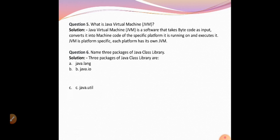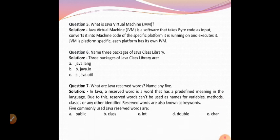What is Java Virtual Machine? Java Virtual Machine, that is JVM, is a software that takes bytecode as input, converts it into machine code of the specific platform it is running on, and executes it. JVM is platform specific — each platform has its own JVM. Name three packages of the Java class library: java.lang, java.io, and java.util.